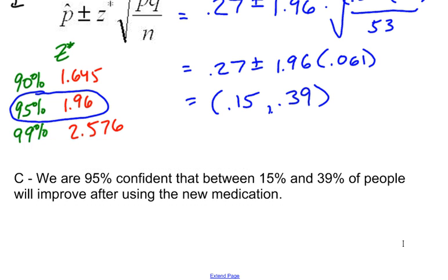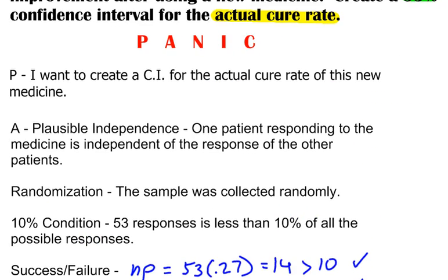And there it is. And again, I want to point out here that there's three parts to this. There's the confidence level. There's the confidence interval. And there's the context itself. Whenever you write your conclusion for a confidence interval, it will almost always look something like this. So this is just one example of how to create a confidence interval for a proportion using PANIC.